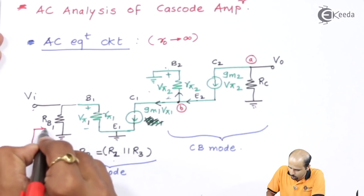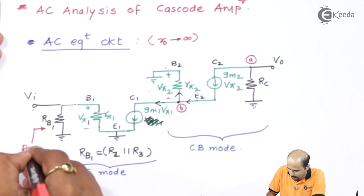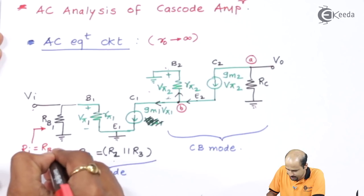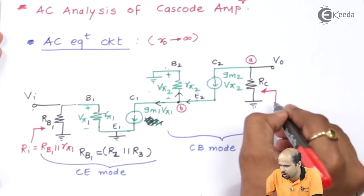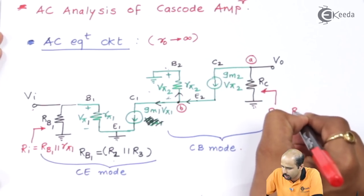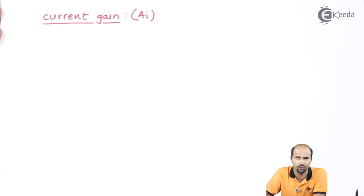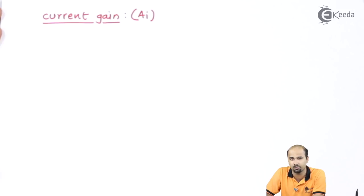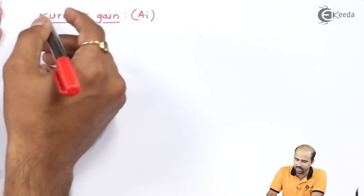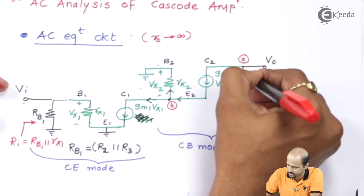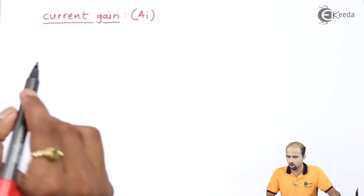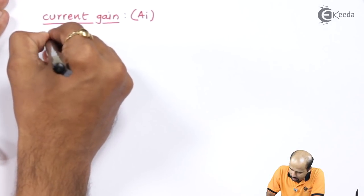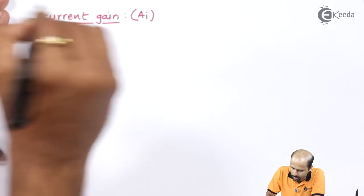At the input side, the input resistance Ri is the parallel combination of RB1 and rπ1 — that is your input resistance. At the output side, the output resistance Ro equals RC. So we have covered voltage gain, input impedance, and output impedance. Now we have to find the current gain.